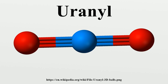In uranyl fluoride, UO2F2, the uranium atom achieves a coordination number of 8 by forming a layer structure with 2 oxygen atoms in a uranyl configuration and 6 fluoride ions bridging between uranyl groups. A similar structure is found in alpha-uranium trioxide, with oxygen in place of fluoride, except that in that case the layers are connected by sharing oxygen atoms from uranyl groups, which are identified by having relatively short U–O distances.